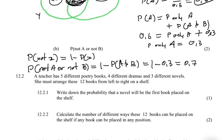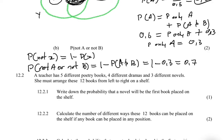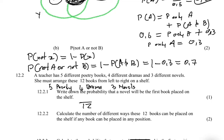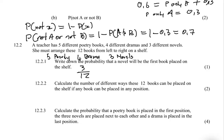Question 12.2: a teacher has five different poetry books, four different drama books, and three novels — 12 books total — which she must arrange from left to right on a shelf. Question 12.2.1 asks for the probability that a novel is the first book placed. She has 12 options and 3 are novels, so the probability is 3/12.